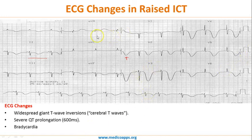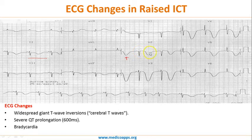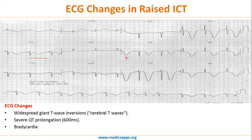The answer is raised intracranial tension. You also see severe QT prolongation — the QT interval spans around 17 to 18 small squares, whereas normally it should be below 9 to 10 small squares. So widespread giant T wave inversion (cerebral T waves), severe QT prolongation, and bradycardia — all these changes together point towards a diagnosis of increased intracranial tension.